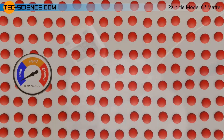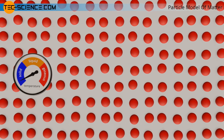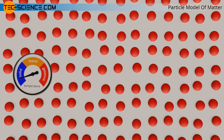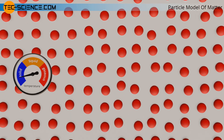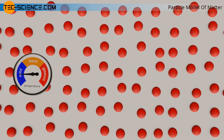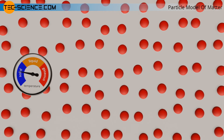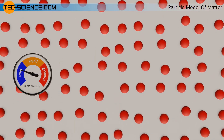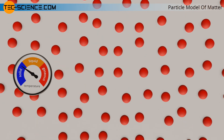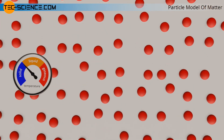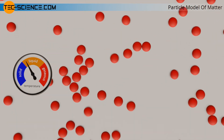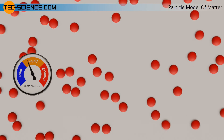The particle model can be used to illustrate phase transitions such as melting or vaporization. If the temperature of a solid is gradually increased, the particles, which are initially bound to each other relatively strongly, move more and more violently. Once the oscillations have finally become so violent that the particles gain a relatively large distance from each other, the intermolecular bonding forces decrease in strength. The particles are now no longer bound to their original fixed position, and the solid substance finally begins to become liquid — it melts.